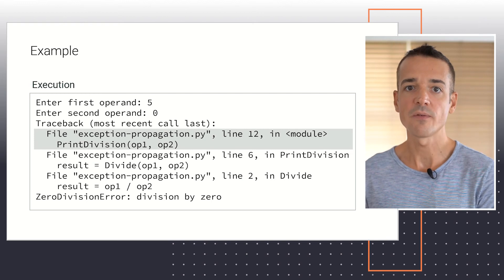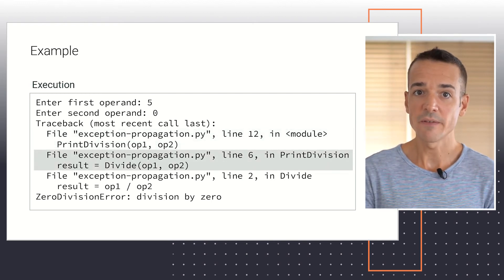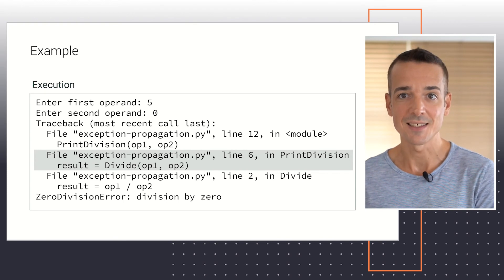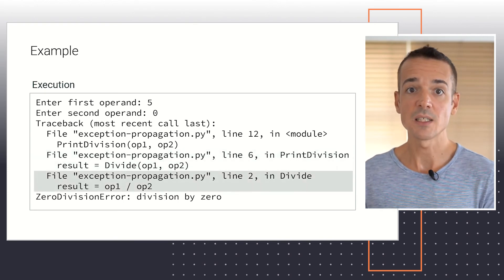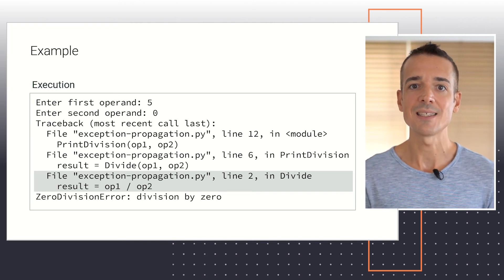First, you see that the main program called function PrintDivision in line 12. Then, function PrintDivision called function Divide in line 6. Finally, function Divide is ultimately responsible for the error caused by the division operation executed in line 2.